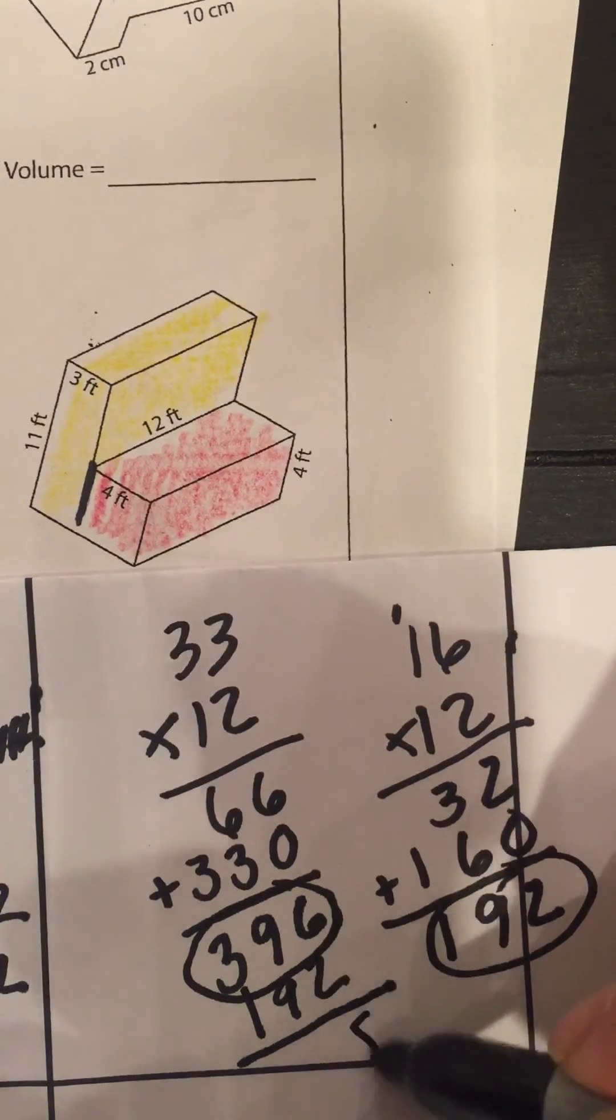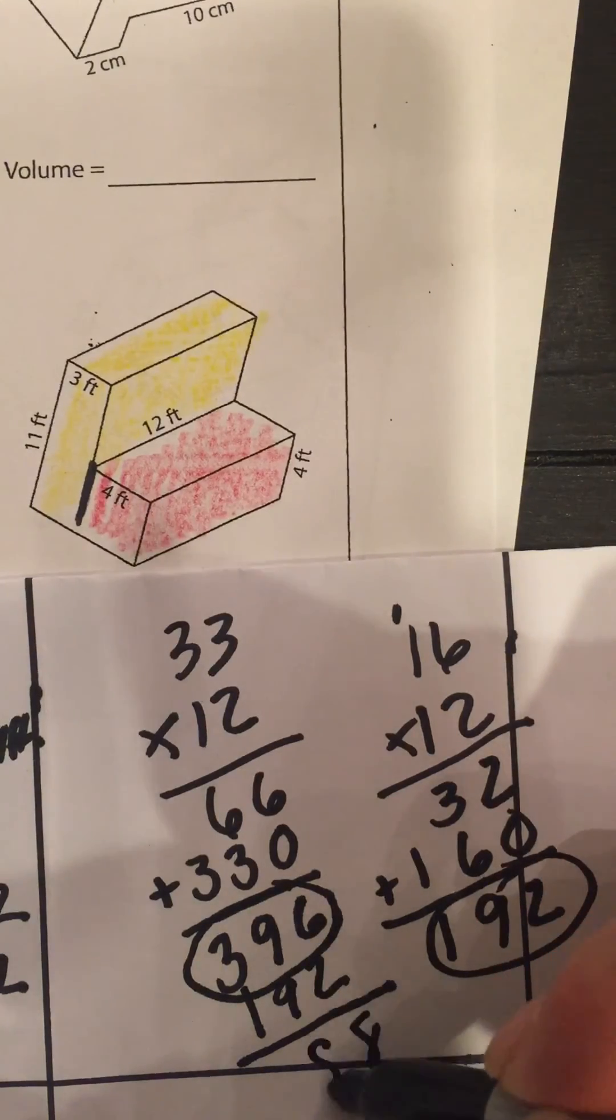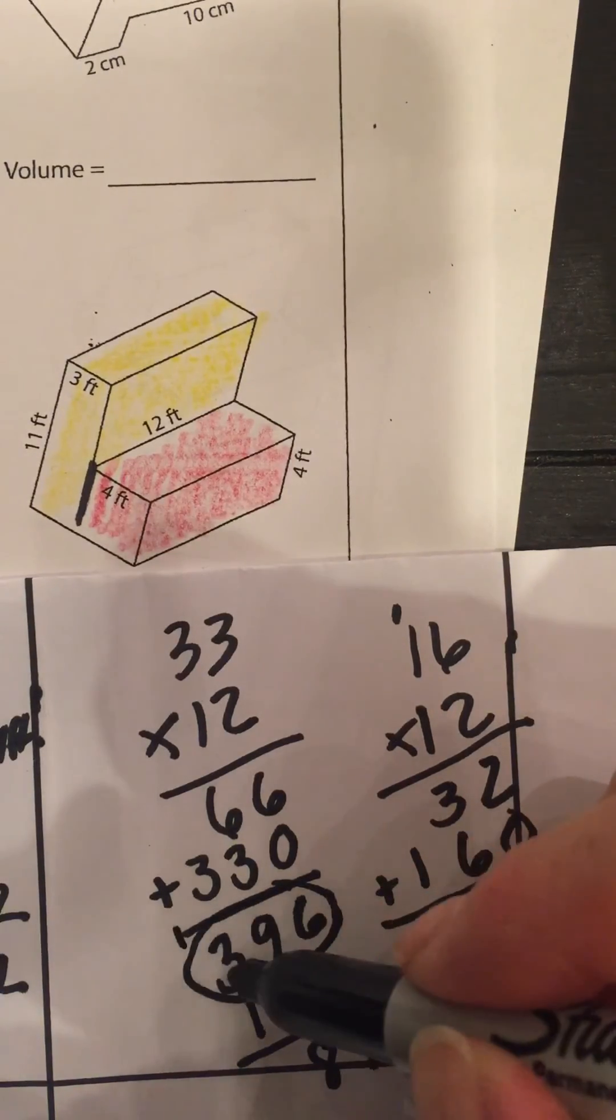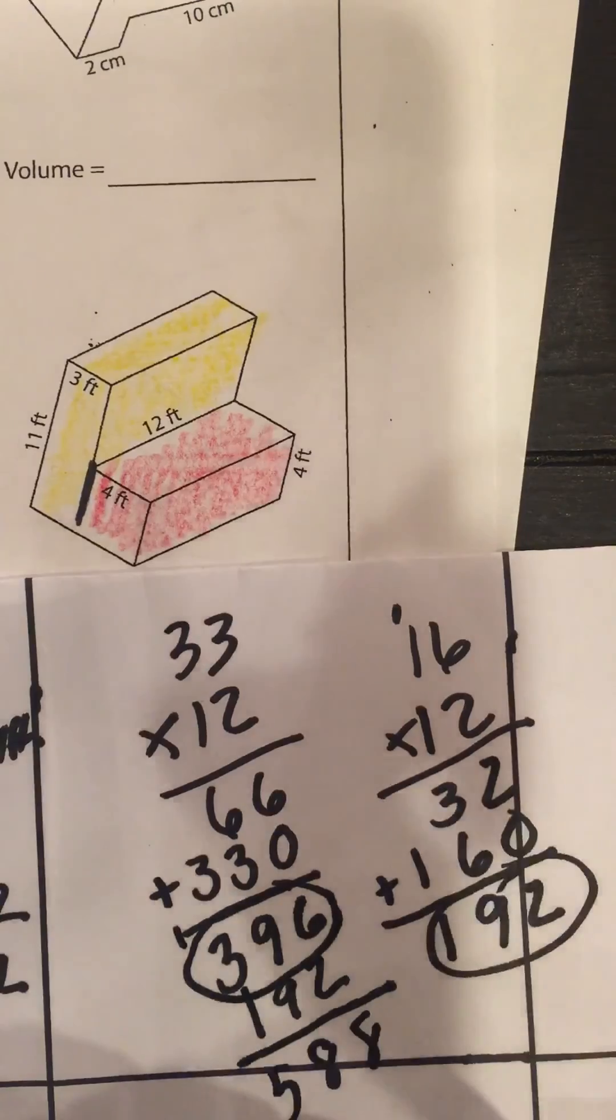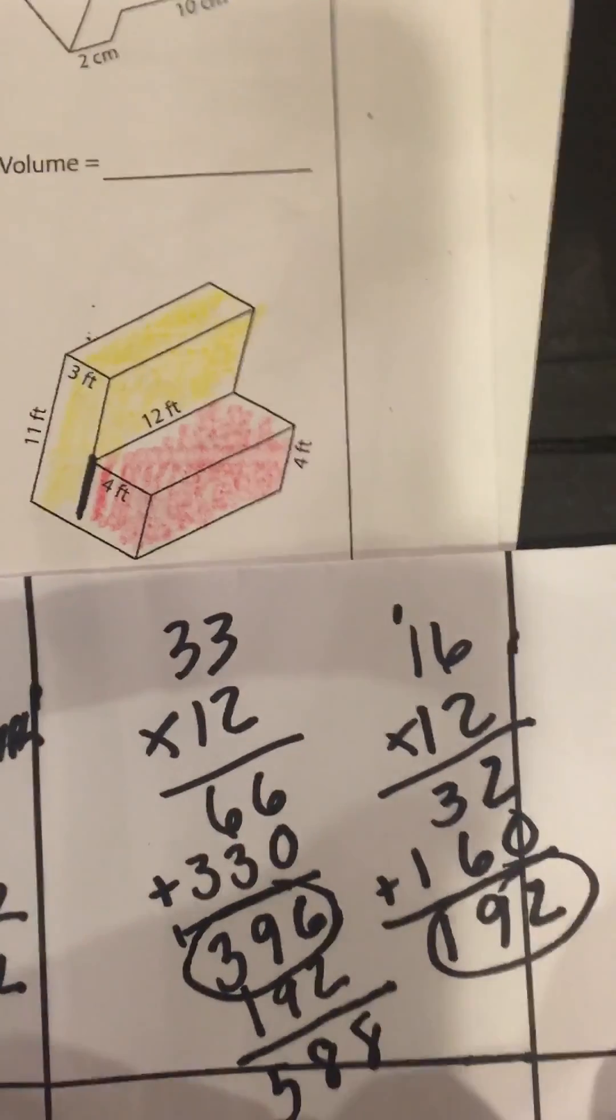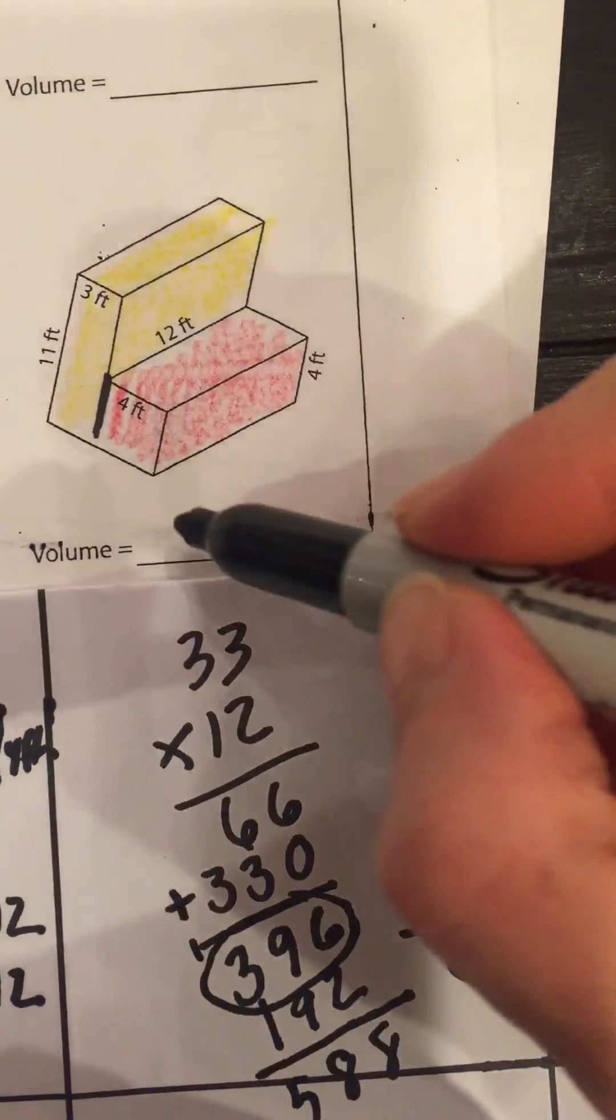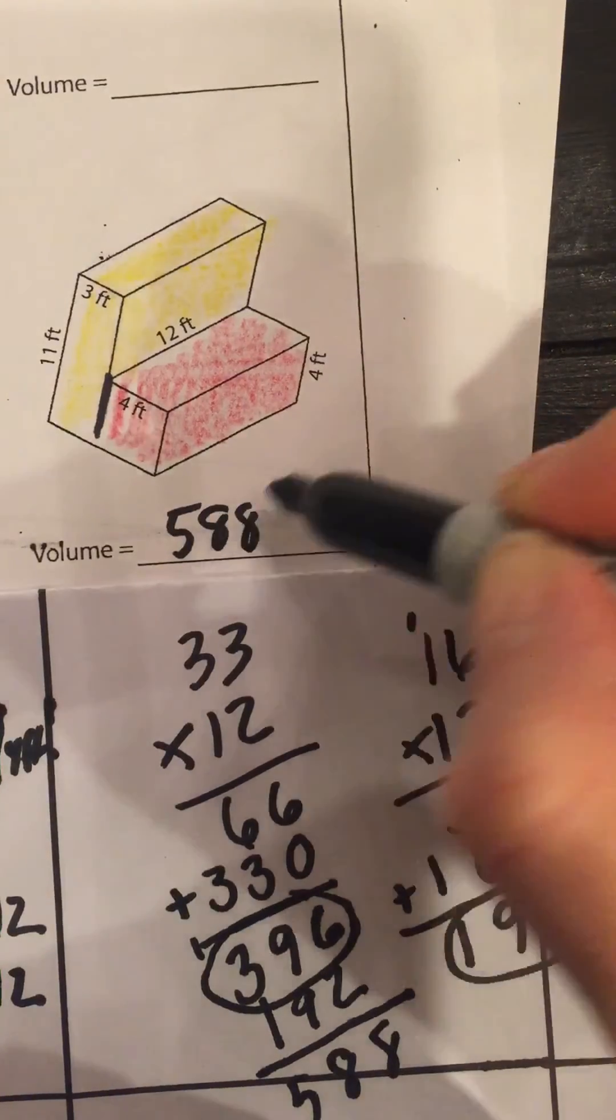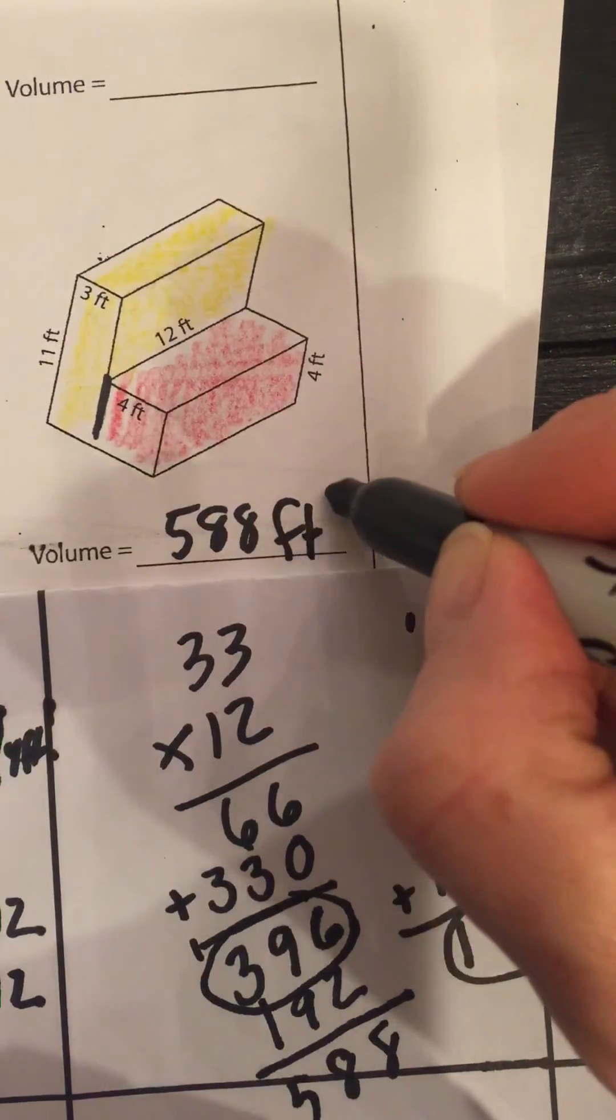6 plus 2 is 8, 9 plus 9 is 18 carry 1, 4, 5. 588 is my answer for the volume there. 588 cubic feet.